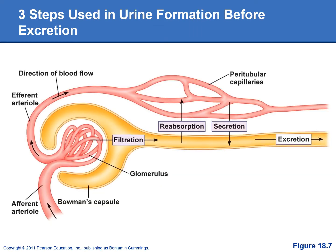Glomerular filtration is going to happen in the glomerulus, this capillary bed here. That's where we first filter the plasma — the liquid part of the blood — and make the filtrate. As the filtrate goes down the renal tubules, we also have reabsorption and secretion going on.